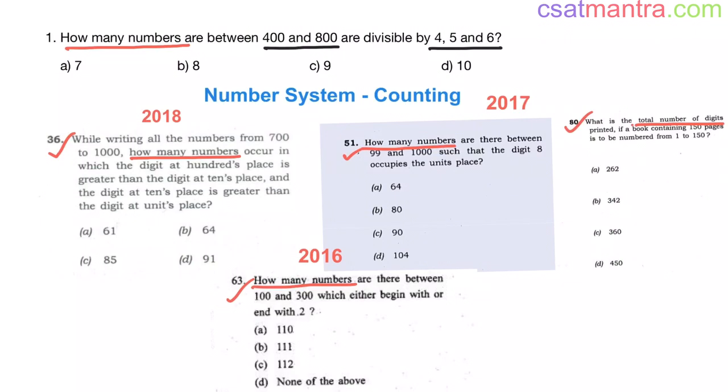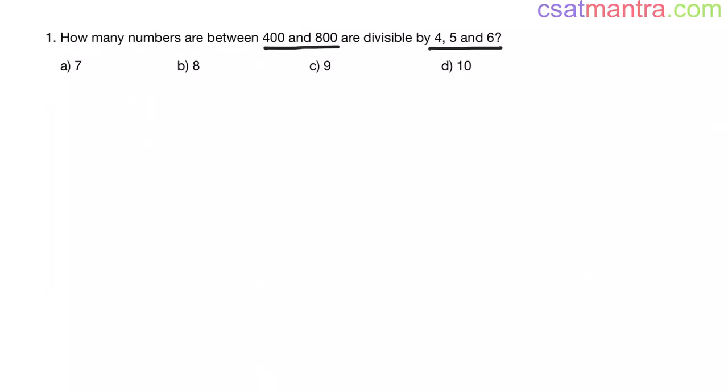Let's solve this question. In this problem we will be making use of the LCM concept, because those numbers divisible by 4, 5, and 6 should be multiples of 4, 5, and 6.